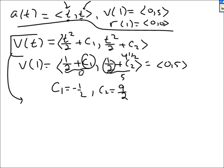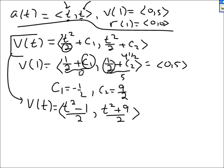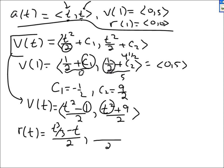Updating the formula: v of t is ((t² - 1)/2, (t² + 9)/2). Now I integrate to find r. The integral of (t² - 1)/2 is (t³/3 - t)/2 plus c1. The integral of (t² + 9)/2 is (t³/3 + 9t)/2 plus c2.